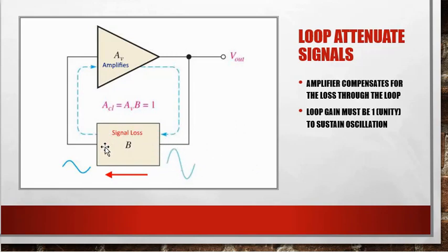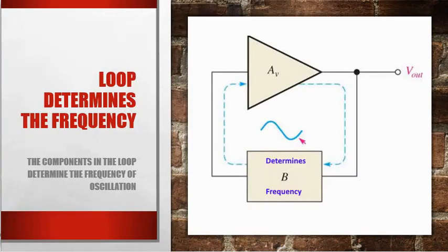It gets through our feedback circuit and what happens is it gets attenuated. The amplifier has to boost the signal back up to our original signal level. So if we look at this complete loop, it should have a gain of one. The loop determines the frequency. So the components in the loop are going to determine the frequency of oscillation.